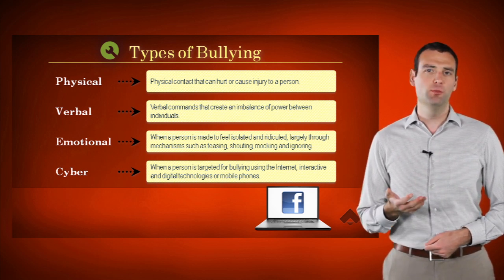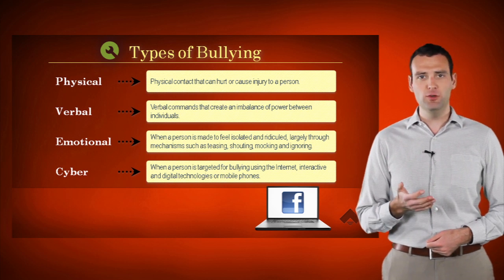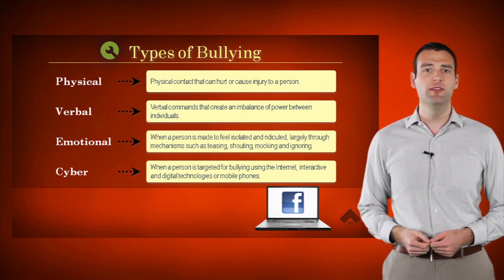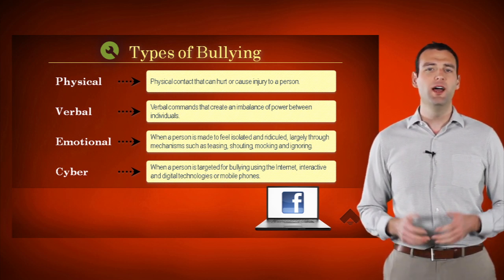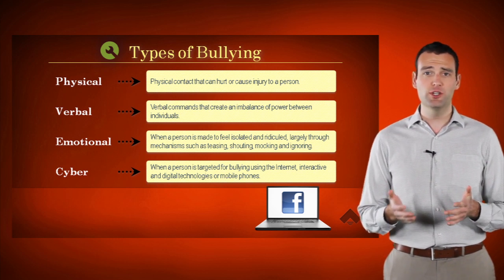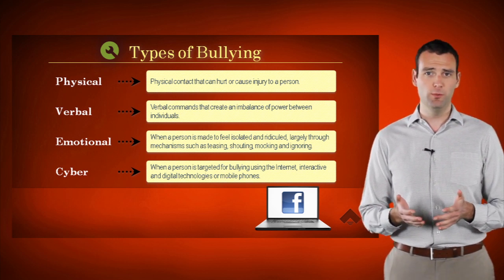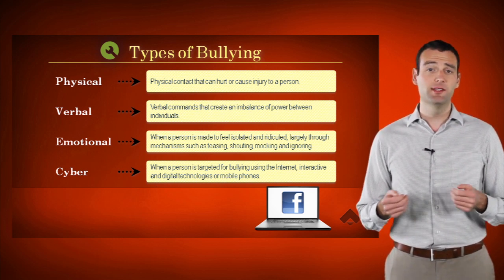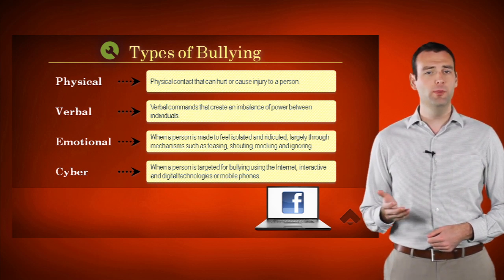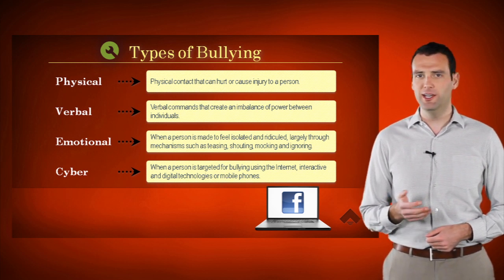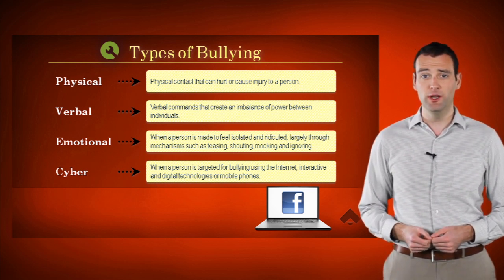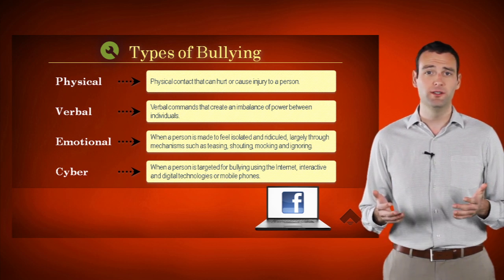Physical bullying involves direct physical contact between the bully and the victim. It can hurt or cause physical injury. Examples include shoving, punching, kicking, and taking or destroying someone's belongings.